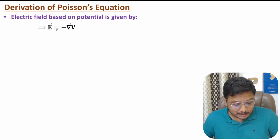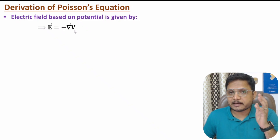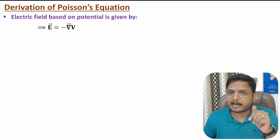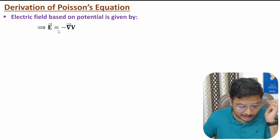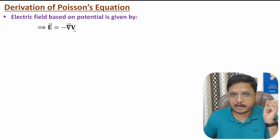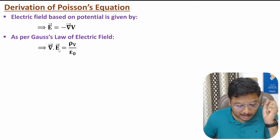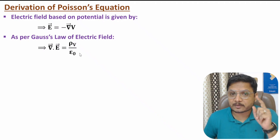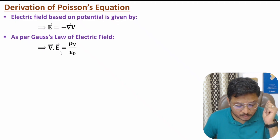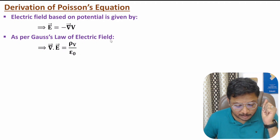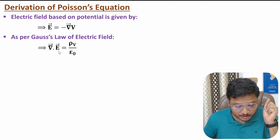To start the derivation of Poisson's equation, one should know the relation of electric field with potential: electric field is the negative of the gradient of voltage. As per Gauss's law of electric field, we can write del dot E equals rho_v divided by epsilon naught. This is Maxwell's first equation in point form, also called Maxwell's first equation in differential form.